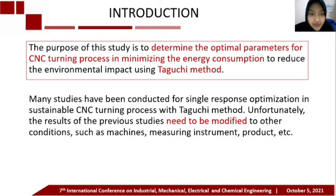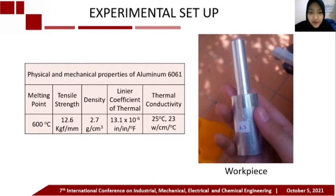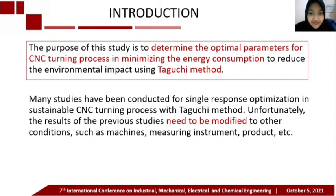The purpose of this study is to determine the optimal parameters for the CNC turning process in minimizing energy consumption to reduce environmental impact, using the Taguchi method. Many studies have been conducted for single-response optimization, and the results of previous studies need to be modified to other conditions such as machines, measuring instruments, product efficiency, and experimental setup.